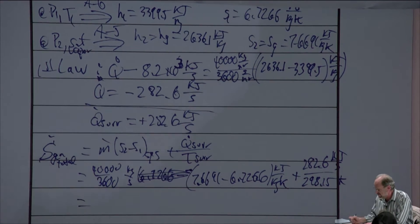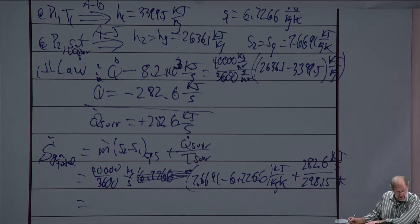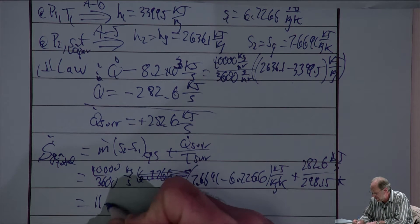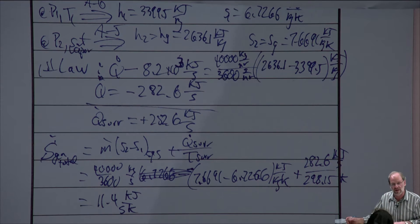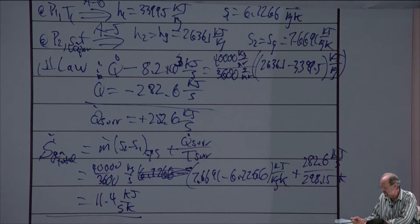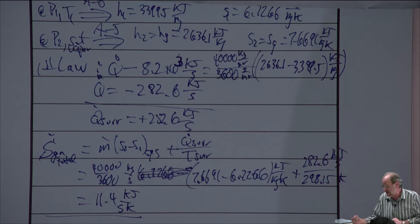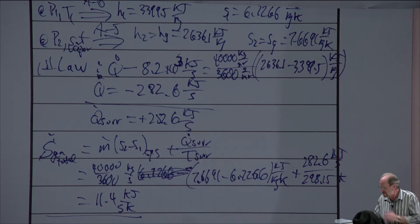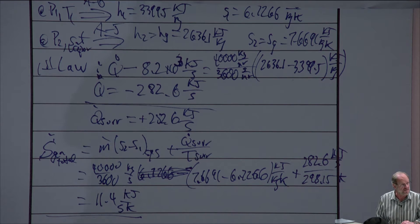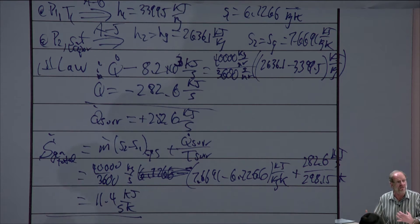Running through the mathematics, we end up with 11.4 kilojoules per second per Kelvin. The rate of entropy generation has units of kilojoules per Kelvin per second. The fact that this is a positive number tells me that this is a possible process — it satisfies the second law. Or, if you will, this is an irreversible process. It's a real process, a possible process.